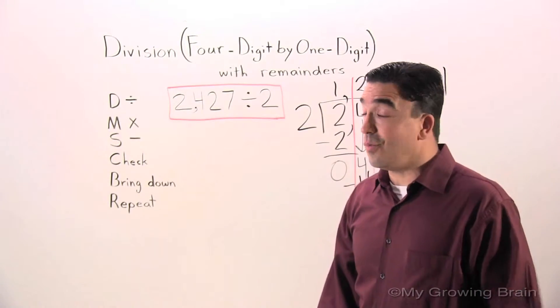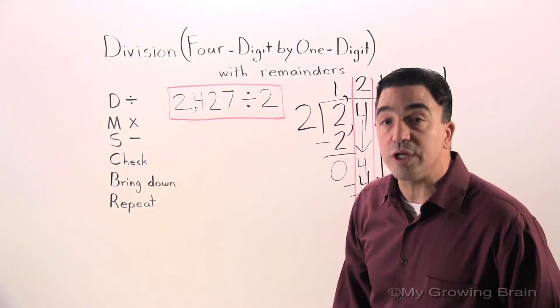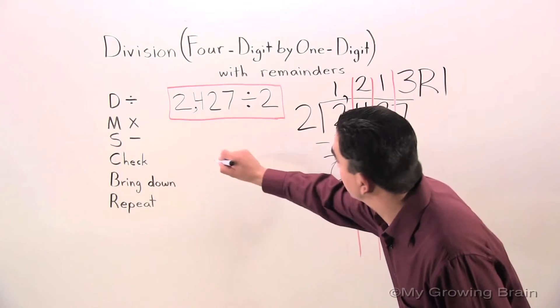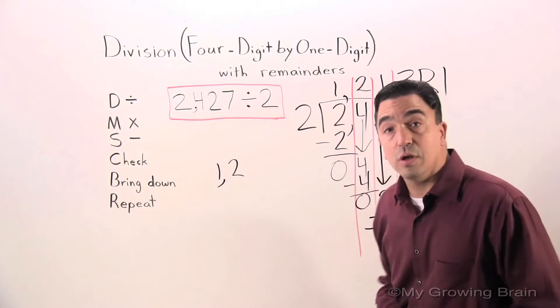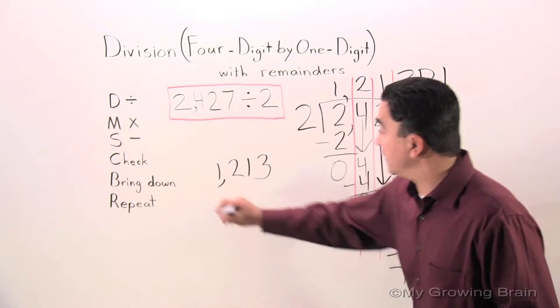However, as your instructor, we are still not done. We have to check this answer to make sure our quotient is correct. So I'm going to write down the quotient 1,213. And I'm going to multiply it times 2.